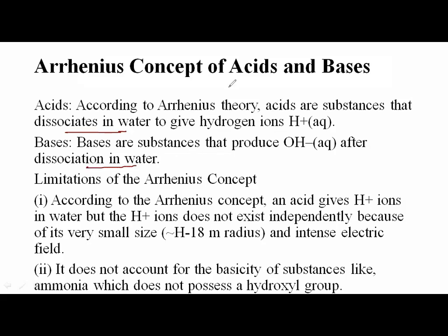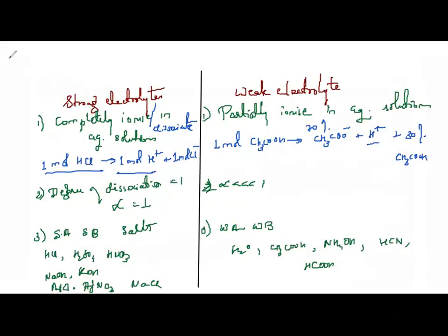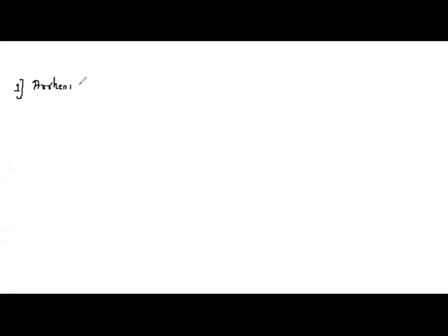For example, HCl dissociates in aqueous solution to give H⁺ and Cl⁻ ions. NaOH dissociates in aqueous solution to give Na⁺ and OH⁻ ions — so it is a base. According to Arrhenius, substances which ionize completely in aqueous solution are called strong acids and strong bases; those which dissociate to a limited extent are called weak acids and weak bases.